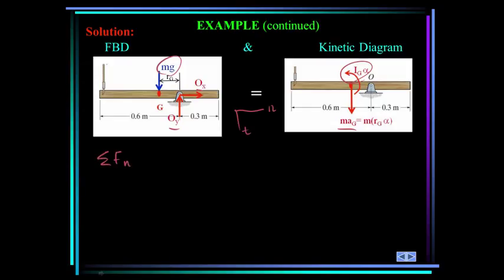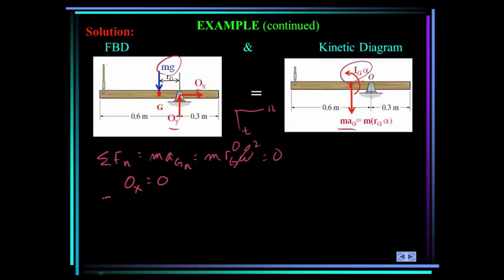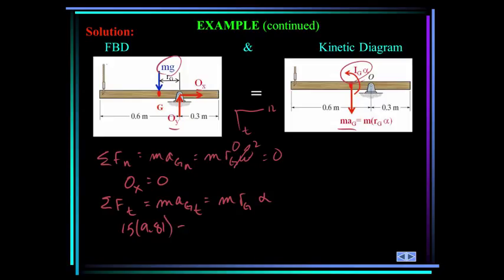Summing forces in the normal direction equals M * R_G * omega squared. Since omega is 0, the summation of forces in the normal direction equals zero, so O_x = 0. Summing forces in the tangential direction — positive downward — gives: 15 * 9.81 minus O_y equals 15 * 0.15 * alpha. This can be rewritten as O_y = 147.15 - 2.25 * alpha.